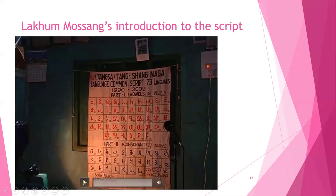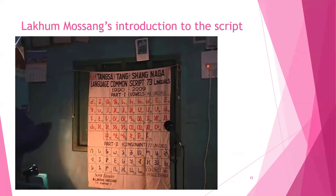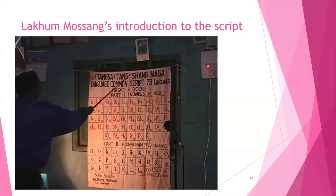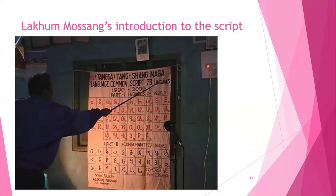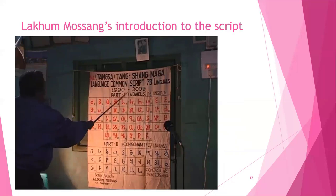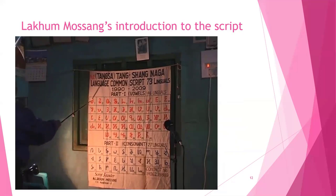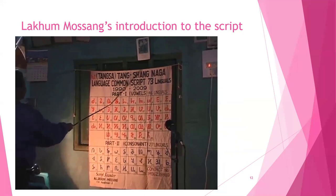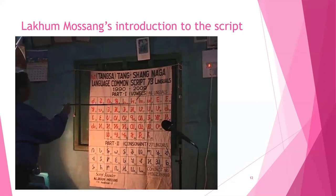Here is Lakum Mosang explaining the script: 'Tangsa Naga Language Common Script, 73 Lingual, 1992–2009, Part One: Vowels, 46 Lingual Reading System. One O, two O, three O, four O, five A, six A, seven A, eight A.'